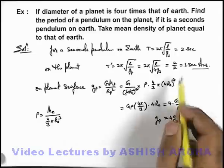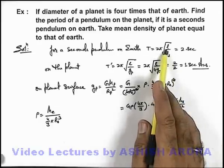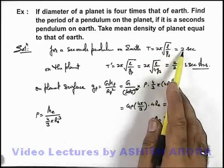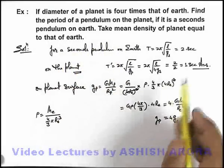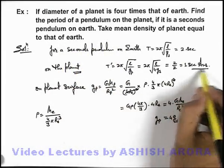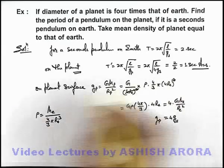That is the answer of this problem. That is for the same pendulum which is the seconds pendulum on Earth surface, on that specific planet for which the information is given to us, the time period of pendulum will be 1 second. That is the answer of this problem.